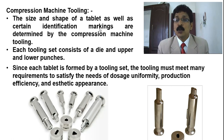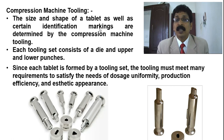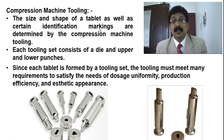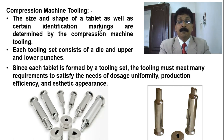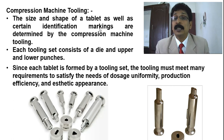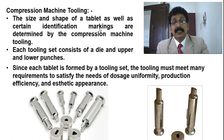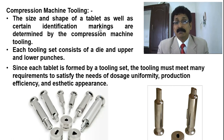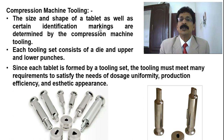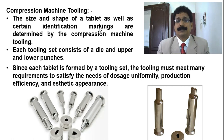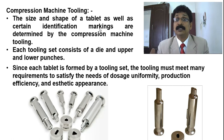Since each tablet is formed by a tooling set, the tooling must meet many requirements to satisfy dosage uniformity, production efficiency, and aesthetic appearance of the tablet. Aesthetic appearance is very important because nowadays patients require satisfaction before consuming any oral dosage form. You can see one set of upper punch, lower punch, and die shown here. There are also punches with two stems, meaning two tablets can be compressed with one punch — there are even punches that can produce ten tablets at once.